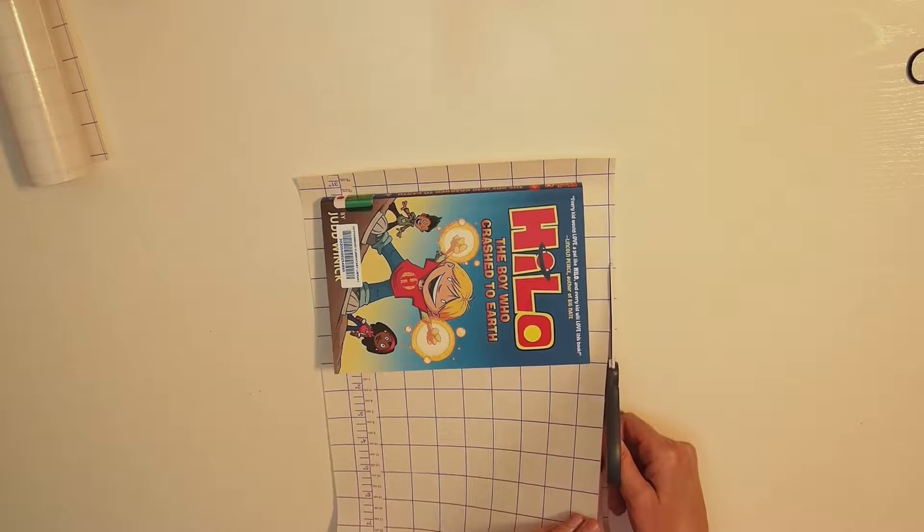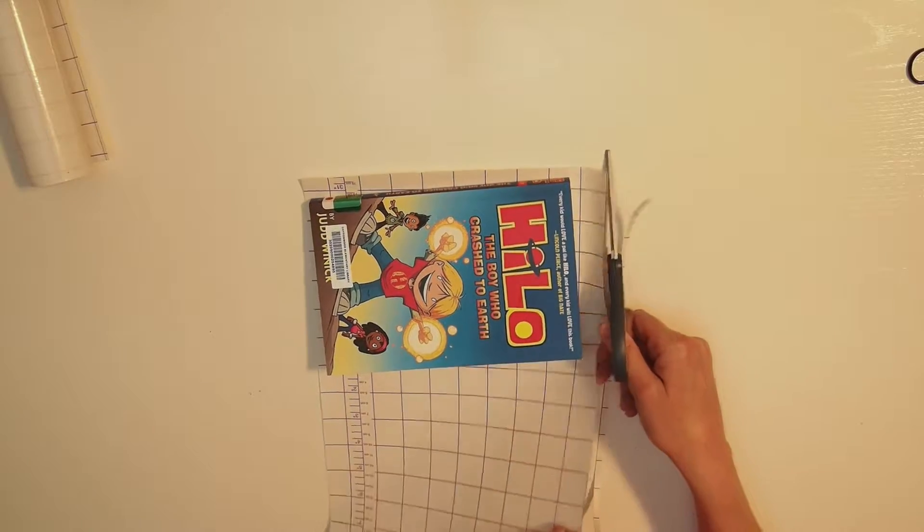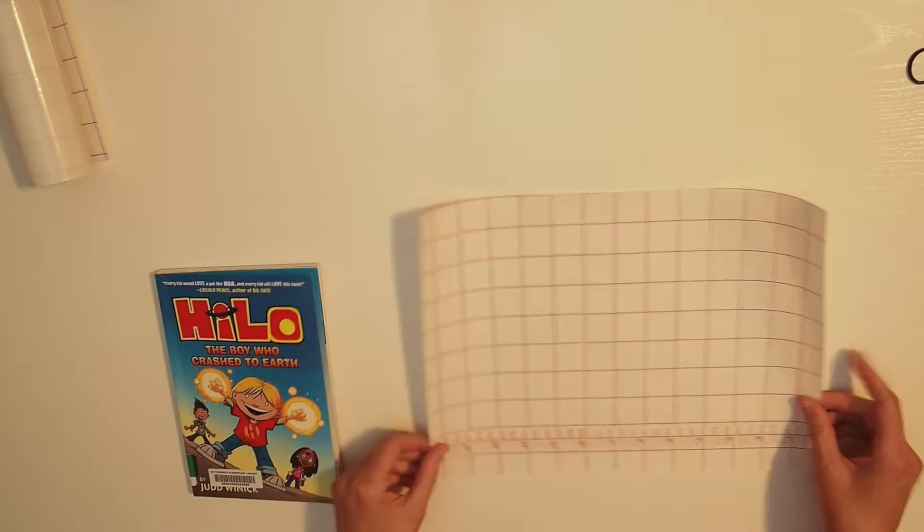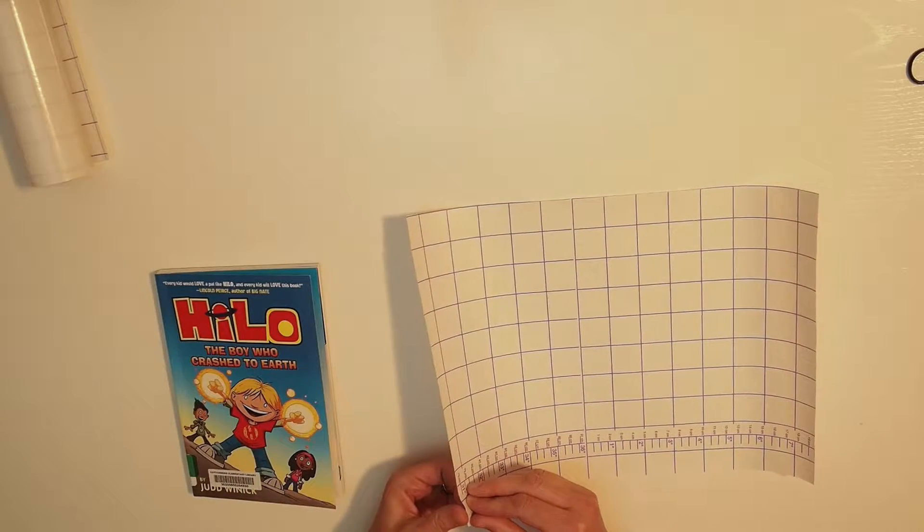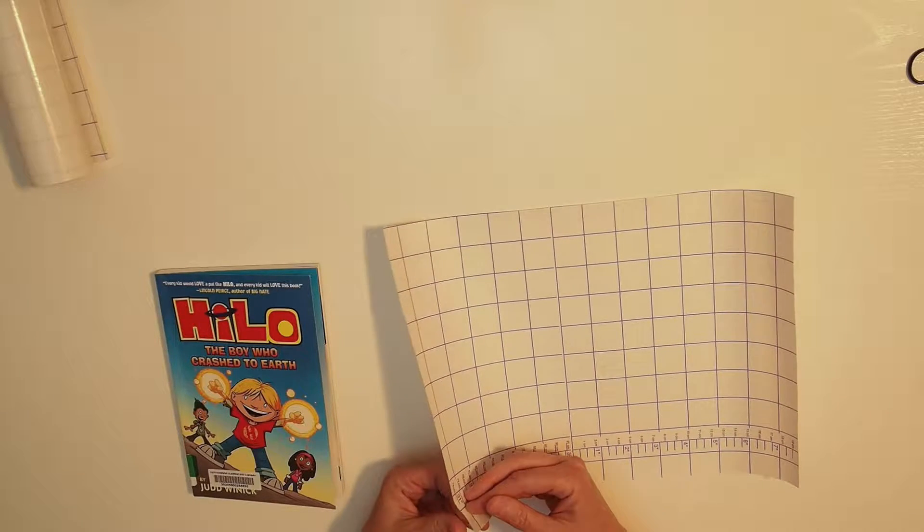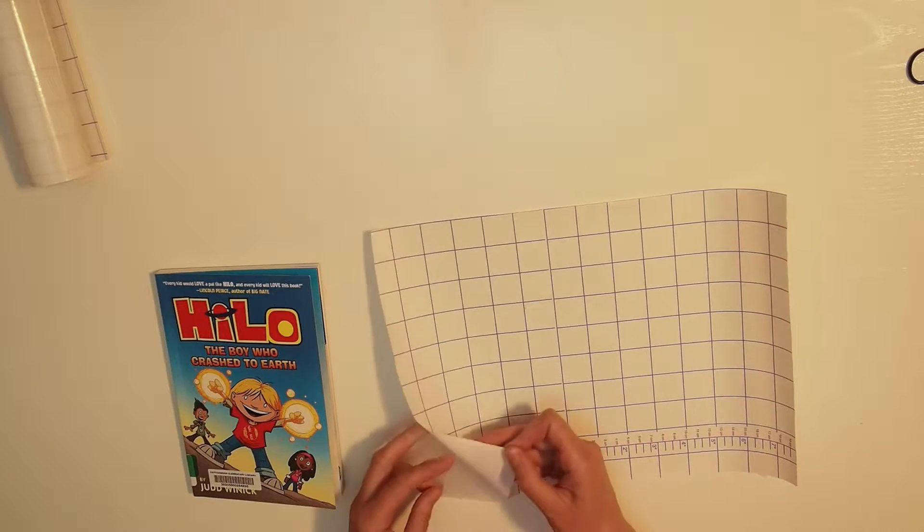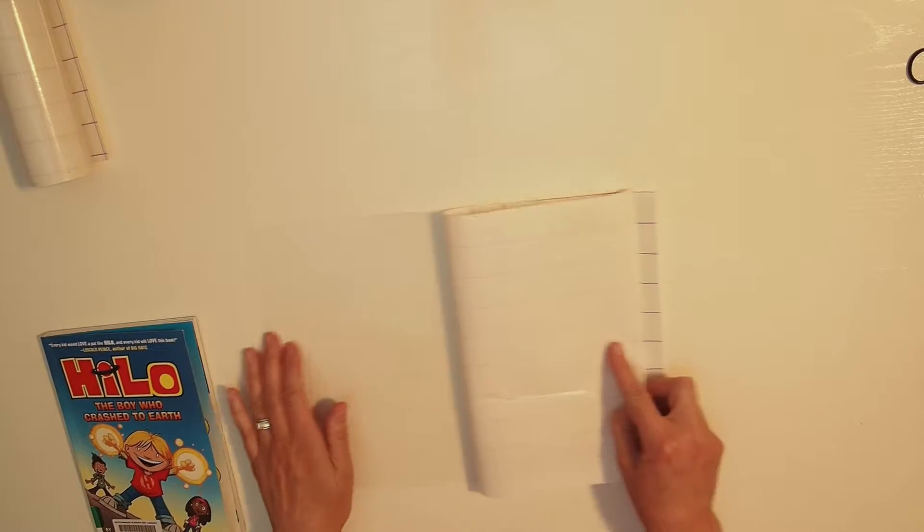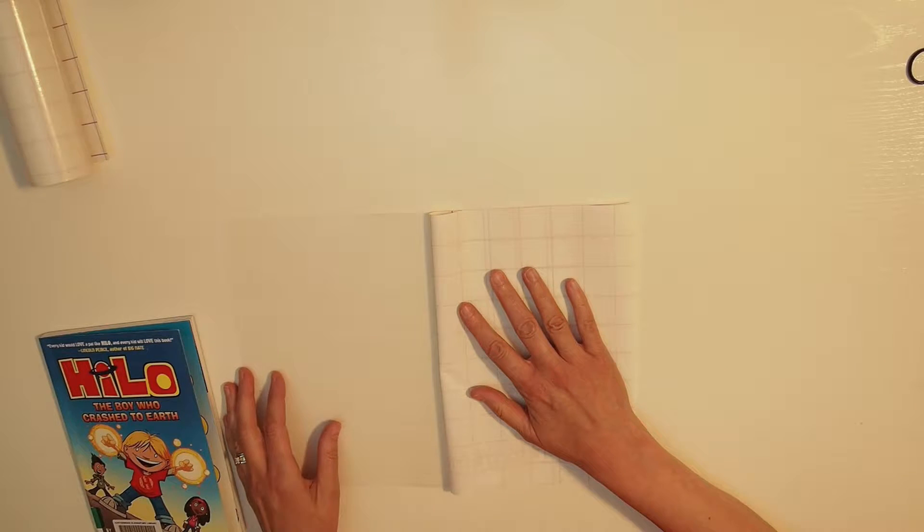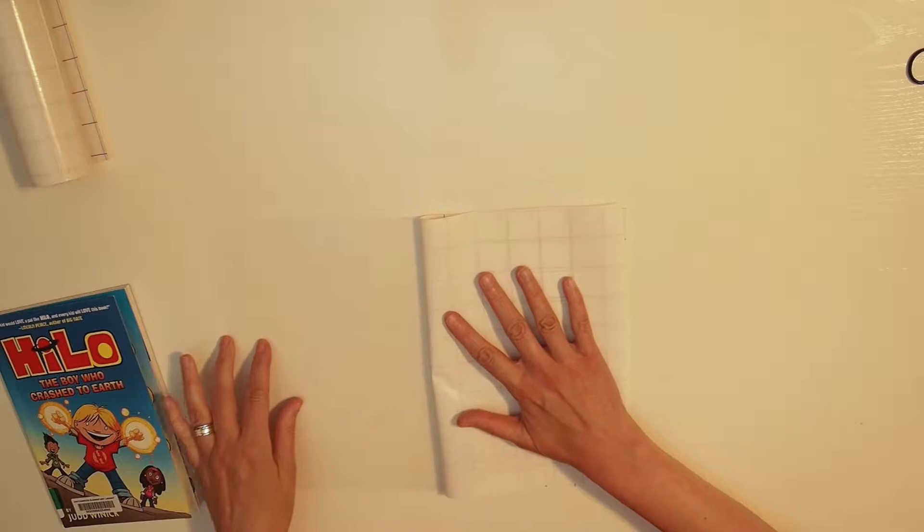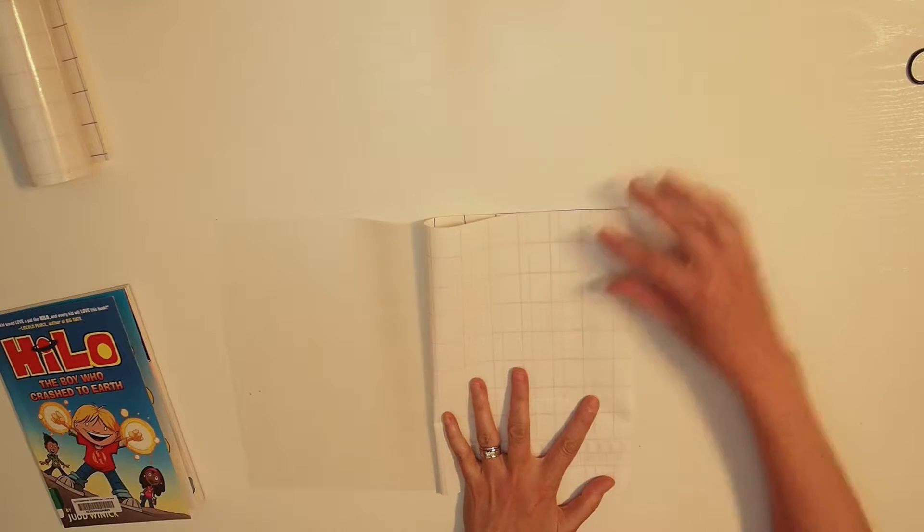And then we're going to peel the laminate from the backing. I find it easiest to pull the laminate away this way, peel it back. Now we need to account for the width of the spine of the book.